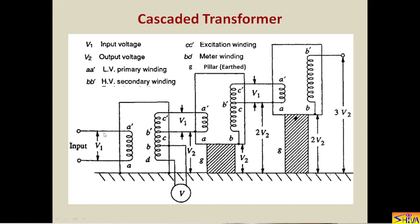In the first unit, AA' is the primary winding or low voltage winding. AA' is also the primary winding of the second unit, and the primary winding of the third unit. Voltage input is V1. On the secondary side, BB' is the secondary winding where the voltage induced is V2. The second unit BB' also has voltage induced V2, and the third unit BB' secondary winding also has voltage induced V2.